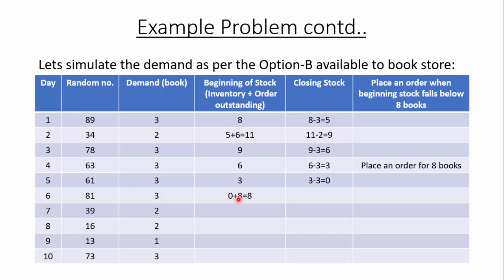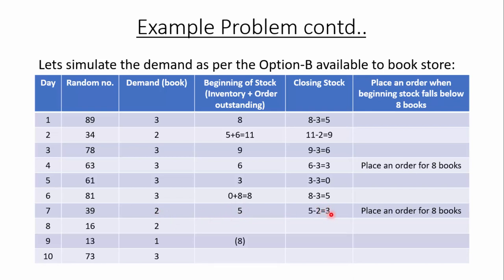At the beginning of day 6 the stock is 8 — 0 from the previous day plus 8 books received — and the demand is 3, so the closing stock is 5. At the beginning of day 7 the stock is 5, which is below 8, so we place an order for 8 books. This order will be received at the beginning of day 9. On day 7 the demand is 2, so the closing stock is 3.